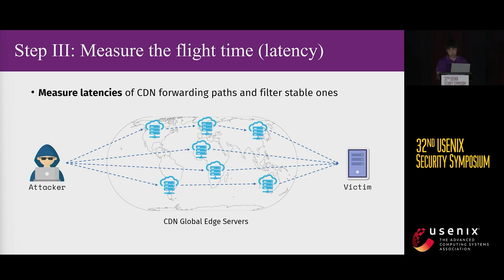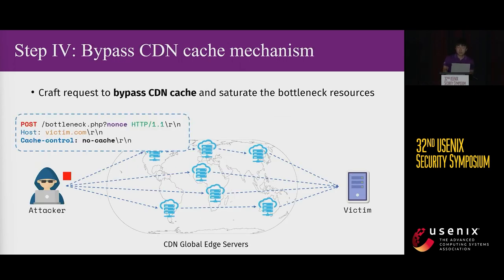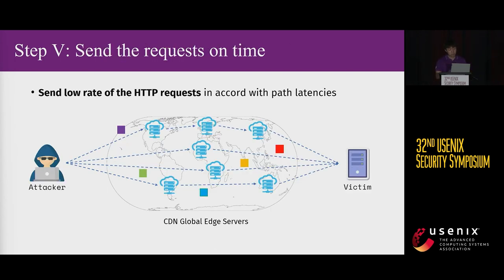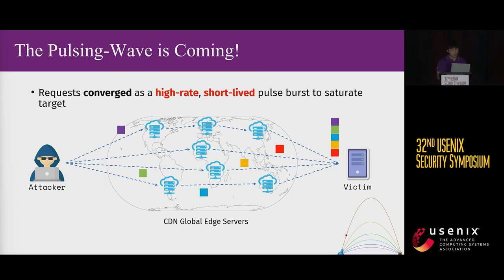Third, measure the network path latency from the attacker to the victim through multiple CDN edge servers. After the measurement, stable edge servers will be selected as artillery for the subsequent attack stages. Fourth, identify the bottleneck resource on the victim server, bypassing the cache mechanism by appending random URL parameters. In the last step, utilizing the latency data previously collected, the attacker deliberately selects edge servers and precisely schedules the timing of HTTP requests, causing the victim to receive a precisely arranged HTTP request pulse that saturates the victim's website.